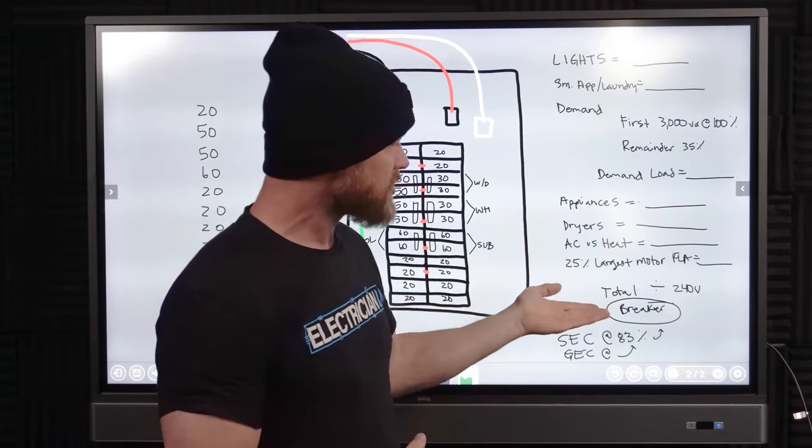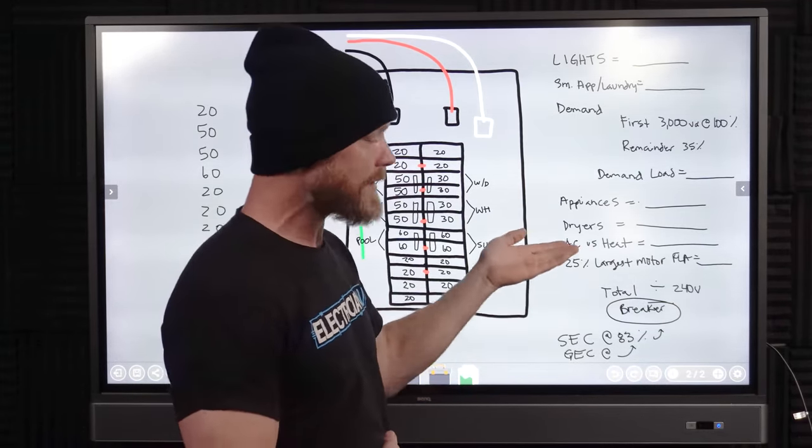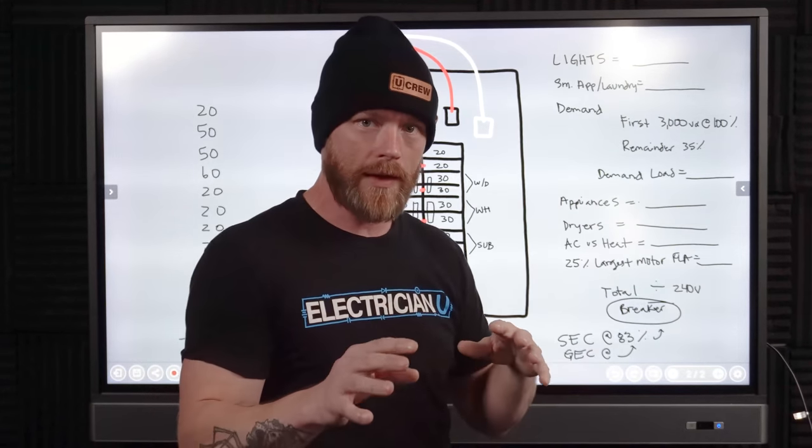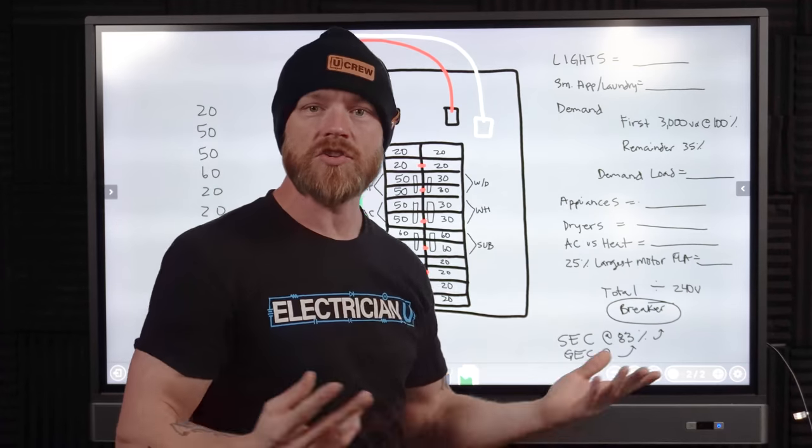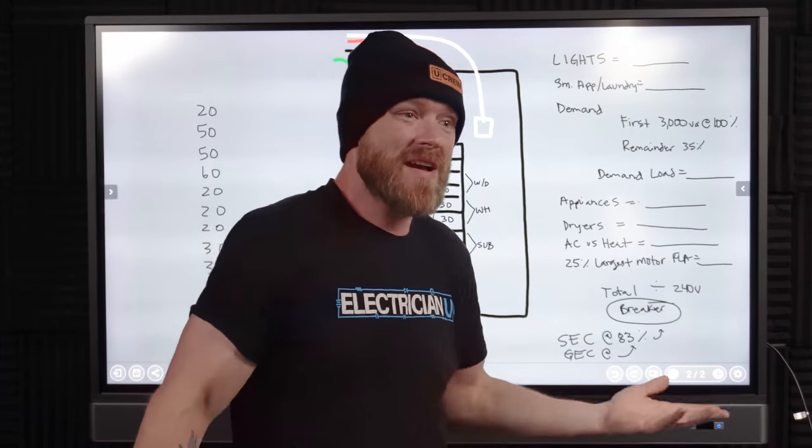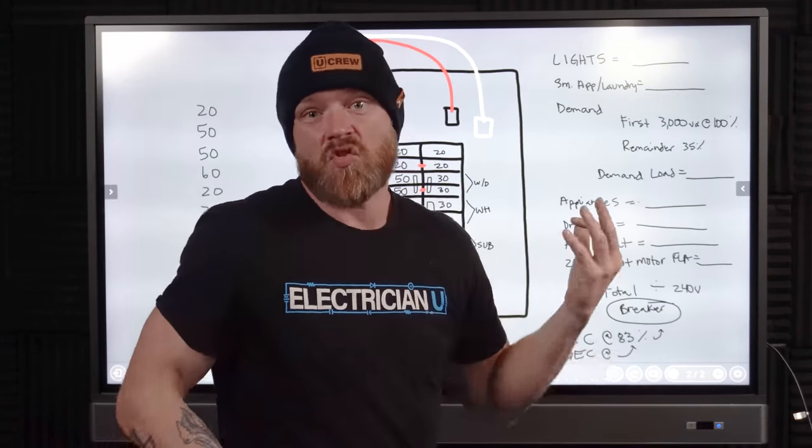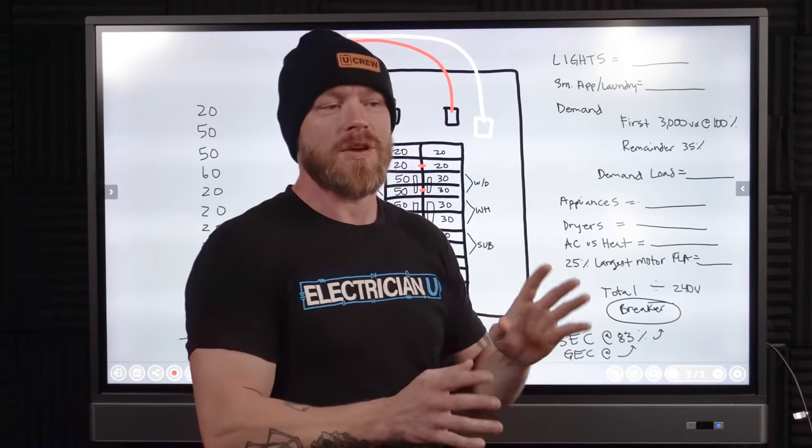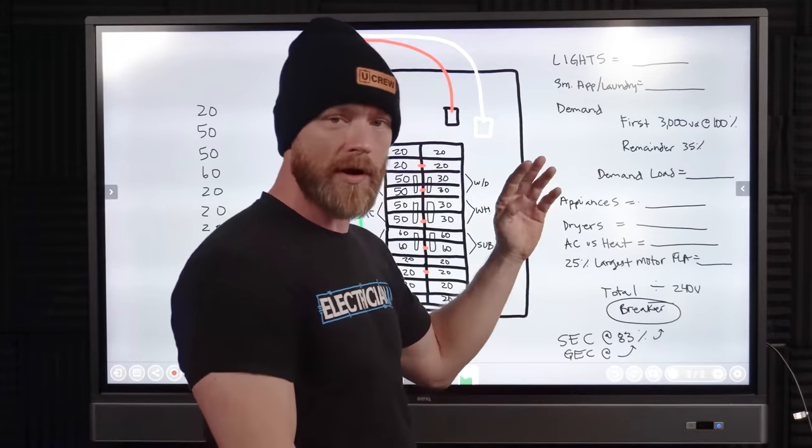So once you get all of those values and what everything are the major loads, the realistic things that are going to be running and how often they're going to be running, then we would do a total of that number and take that total number of VA or of Watts. VA and Watts aren't the same. We'll get into that in a later video, but then you would divide that by 240 volts. And that's going to come up with a breaker size. It might be like 183 or something. And so we don't make breakers that are 183. So you can round up, depending on the situation, you can round up to breakers.